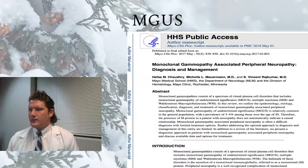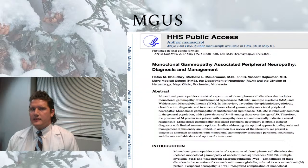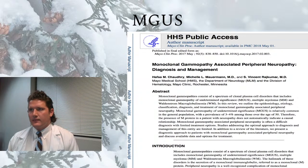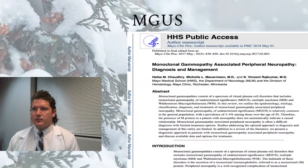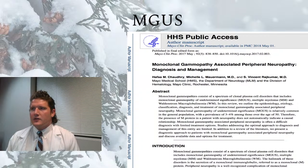These immunoglobulins may be benign, or they may attack peripheral nerve tissue. MGUS can develop into other pathological conditions such as forms of bone cancer or conditions affecting the hematological system — blood cell production — and can also involve the production of light chain amyloidosis.